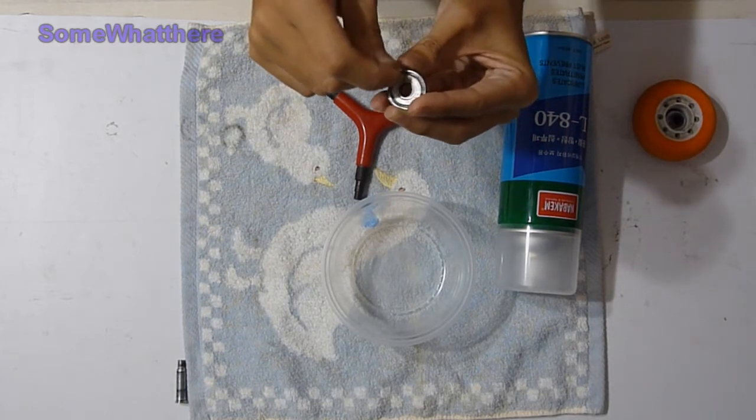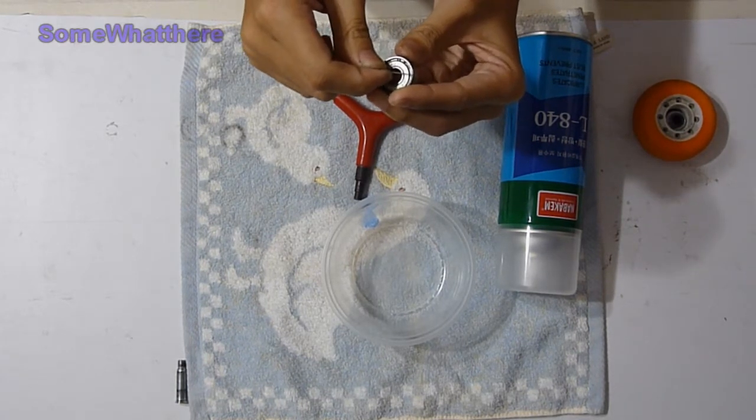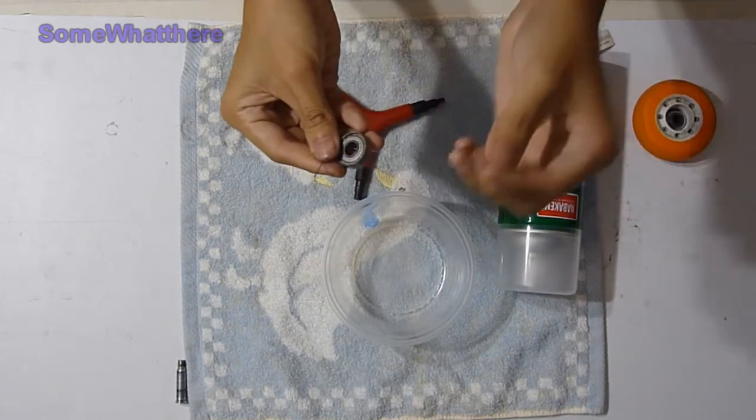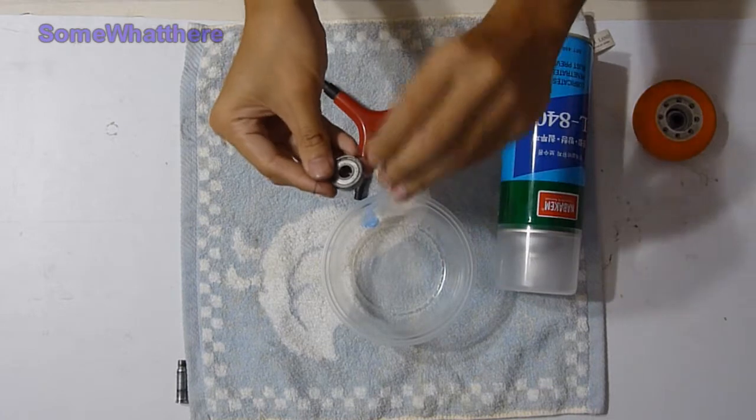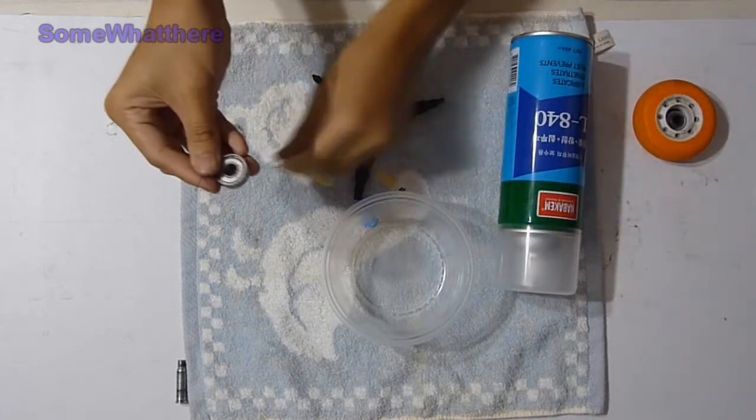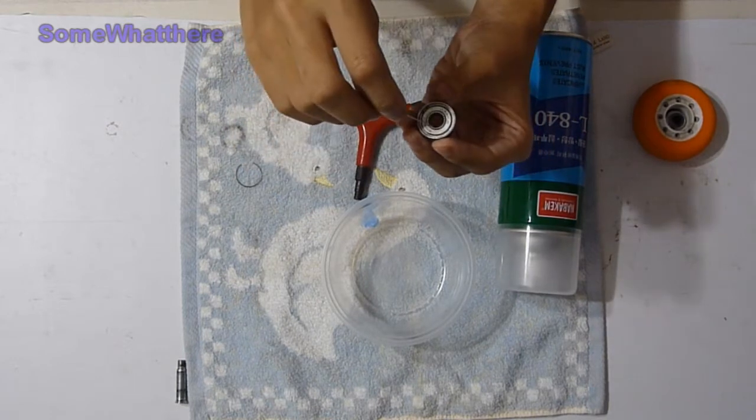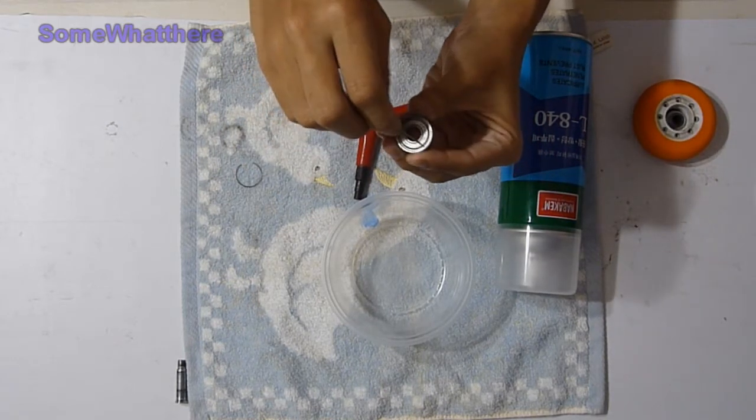Just use the pin to take it out. So out comes the C-clip. Do not lose this because you will need to put it back later. Then just use the pin in the middle and take it out.